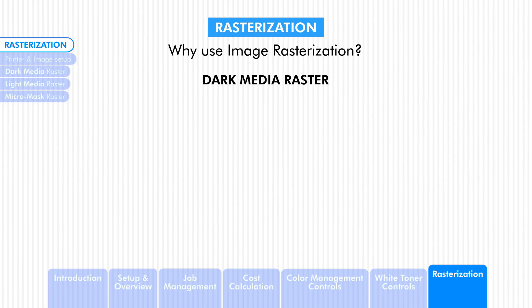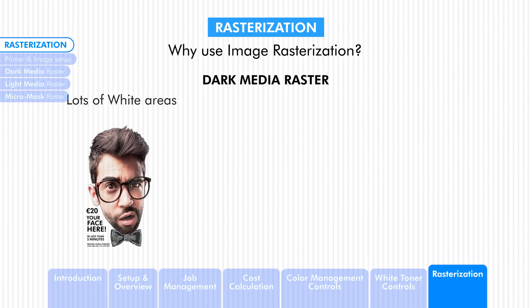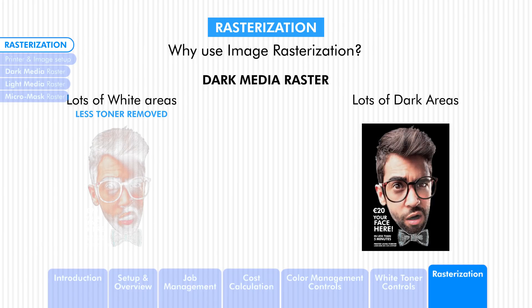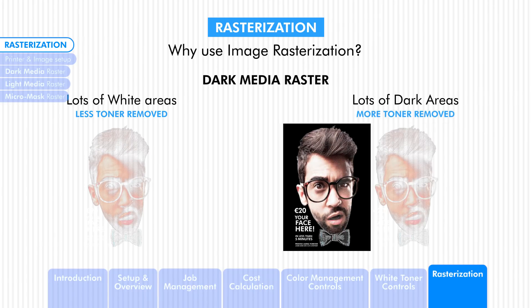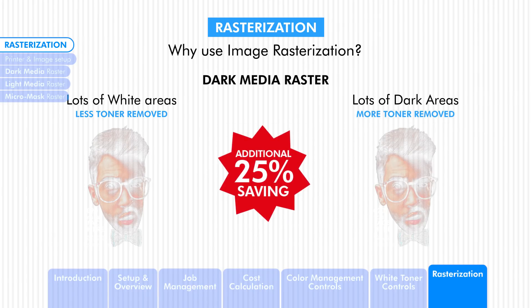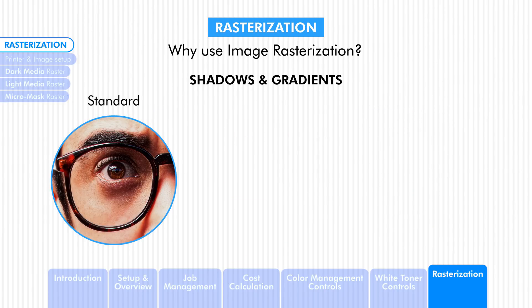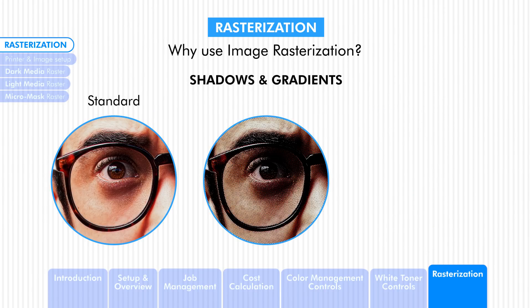If you are using the dark media raster and your image has a lot of white, then less toner is removed. But if your image has a lot of dark areas, then more toner is removed, saving you toner cost. The light-to-dark shading or gradient areas of an image are replaced with dots in various sizes and distances, generating a gradient-like effect.